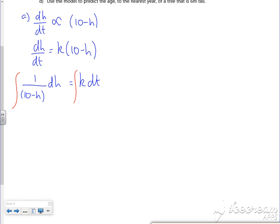That's going to be a log. What I've got is 1, what I want is minus 1 if I differentiate the bottom. So that would be minus ln|10-h| equals kt plus c.